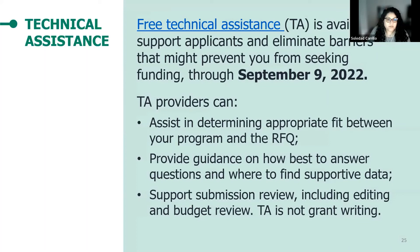Best Starts for Kids provides technical assistance to support applicants and eliminate barriers that may prevent organizations from seeking funding. The last day to request technical assistance is September 9th. TA providers can assist in determining the appropriate fit between your program and the RFQ, provide guidance on how to best answer questions and where to find supportive data, and support submission review including editing and budget review. However, technical assistance is not grant writing. Consultants ask that there be a waiting period of at least 24 hours before reaching out to another consultant. The list of TA providers can be found in the documents section of ZoomGrants.